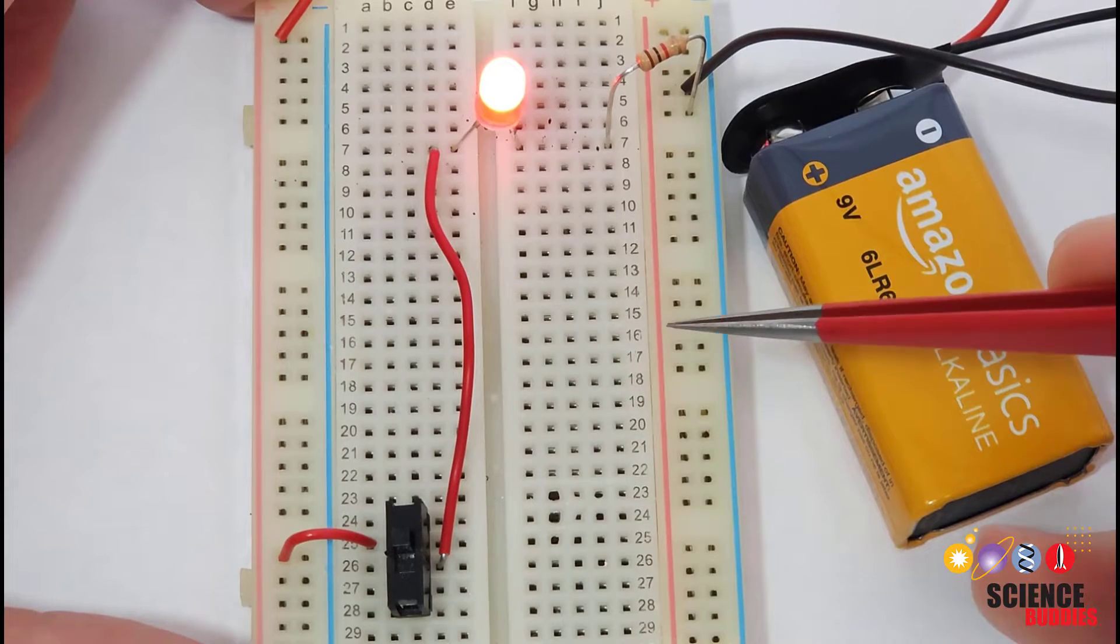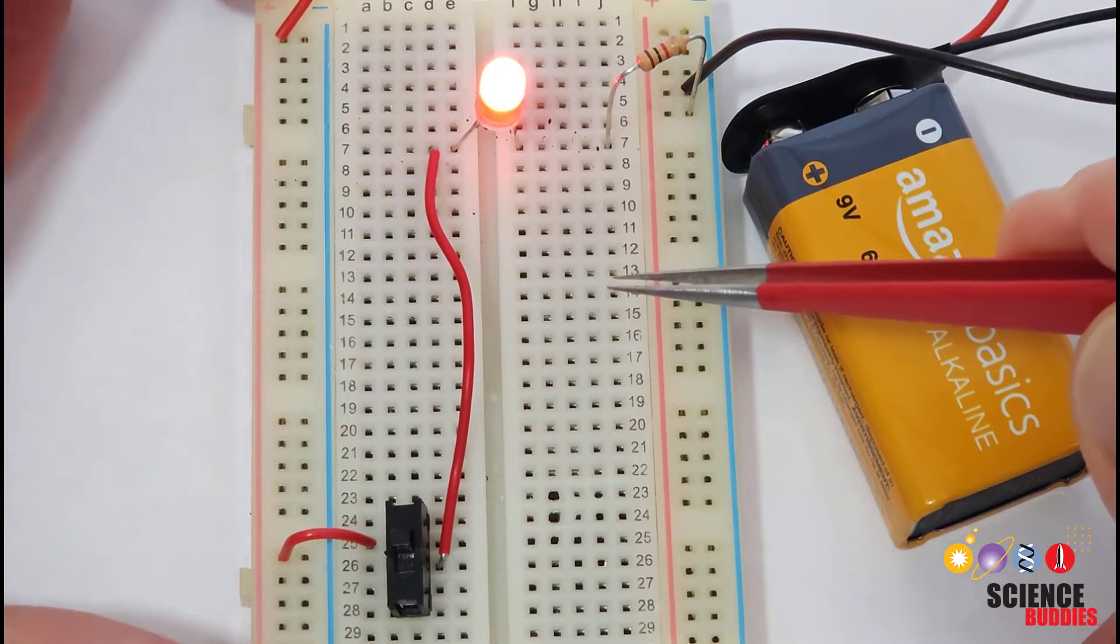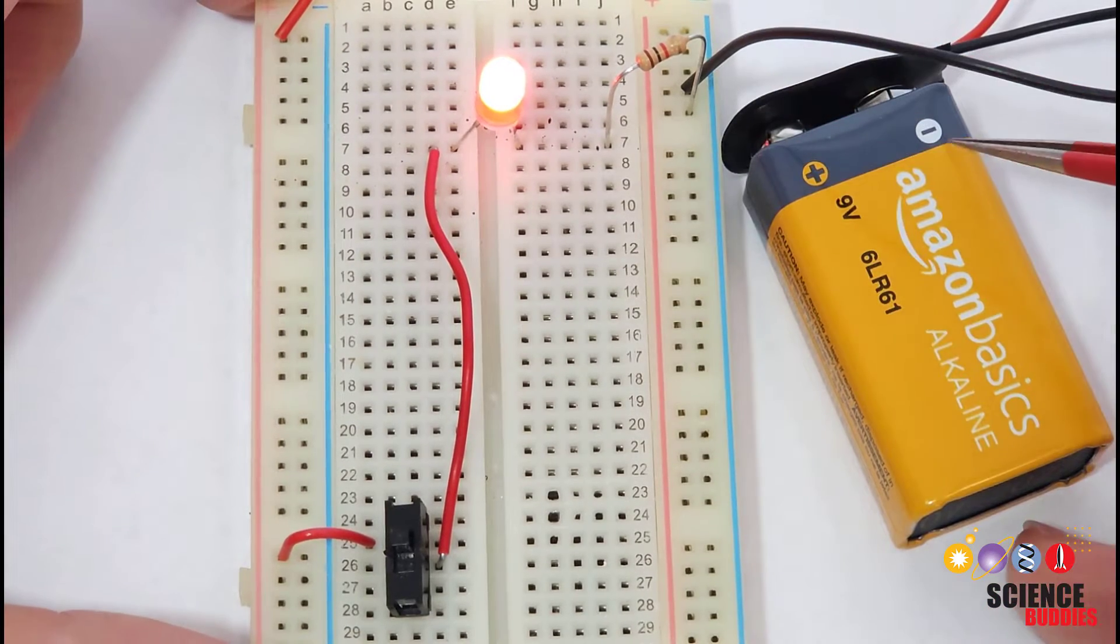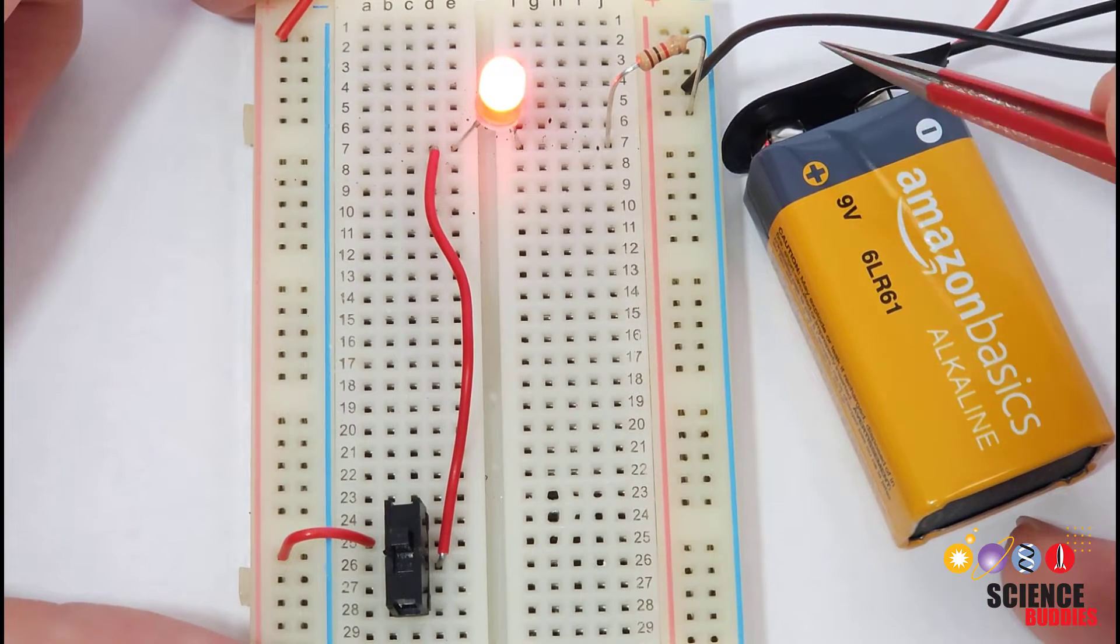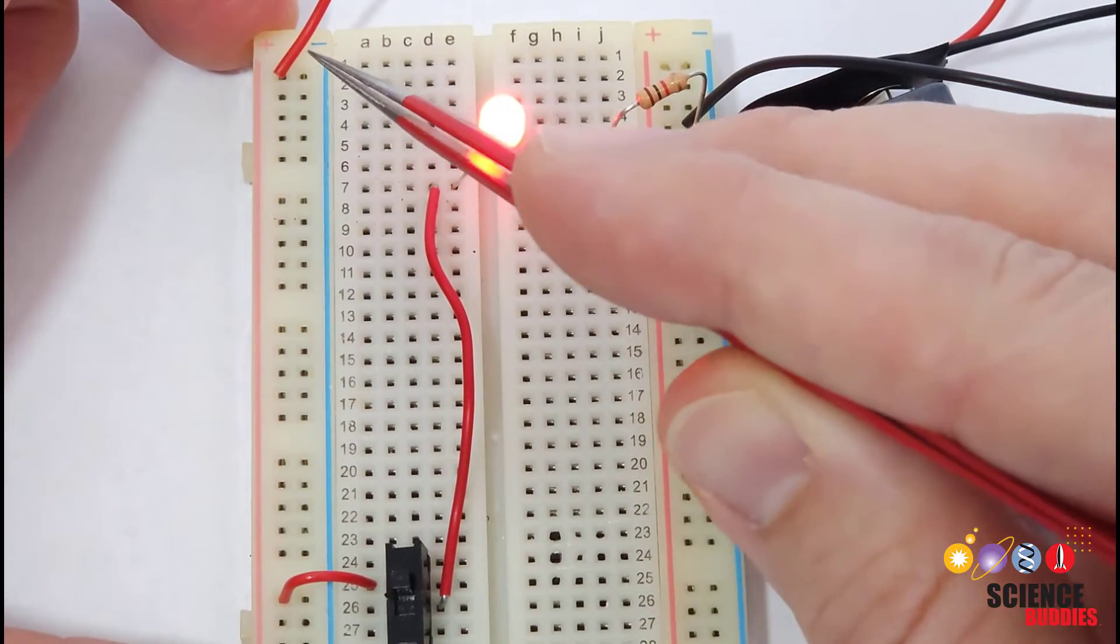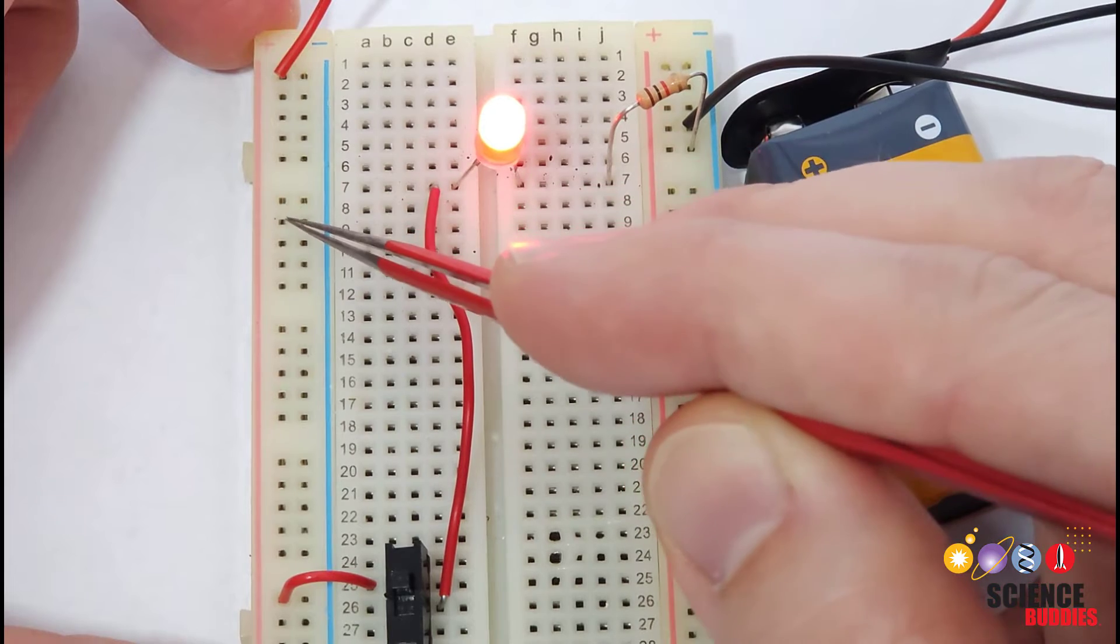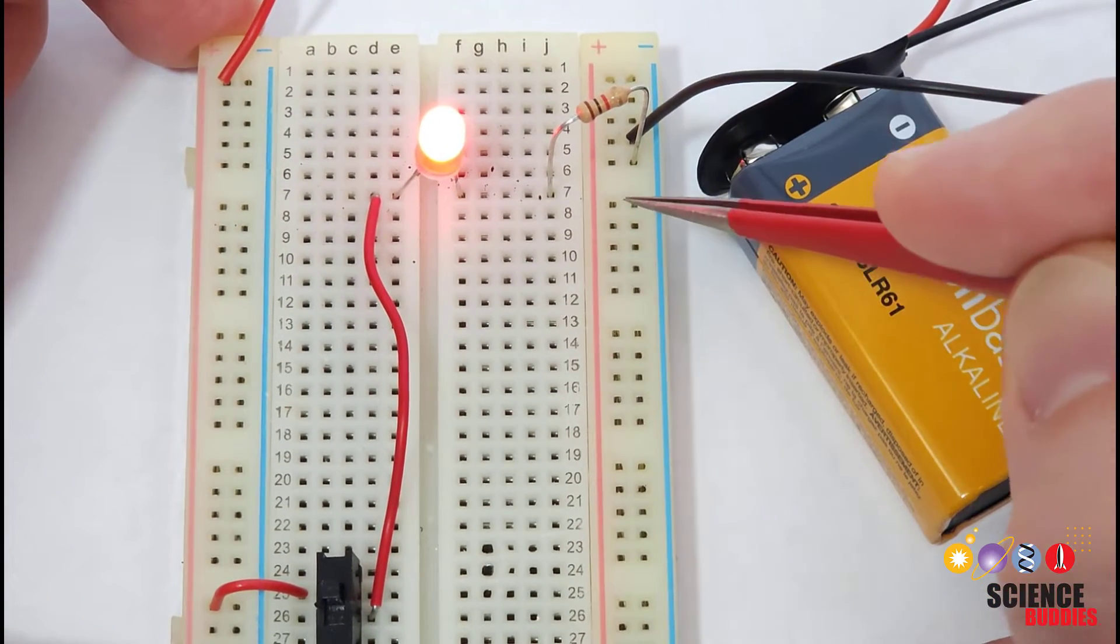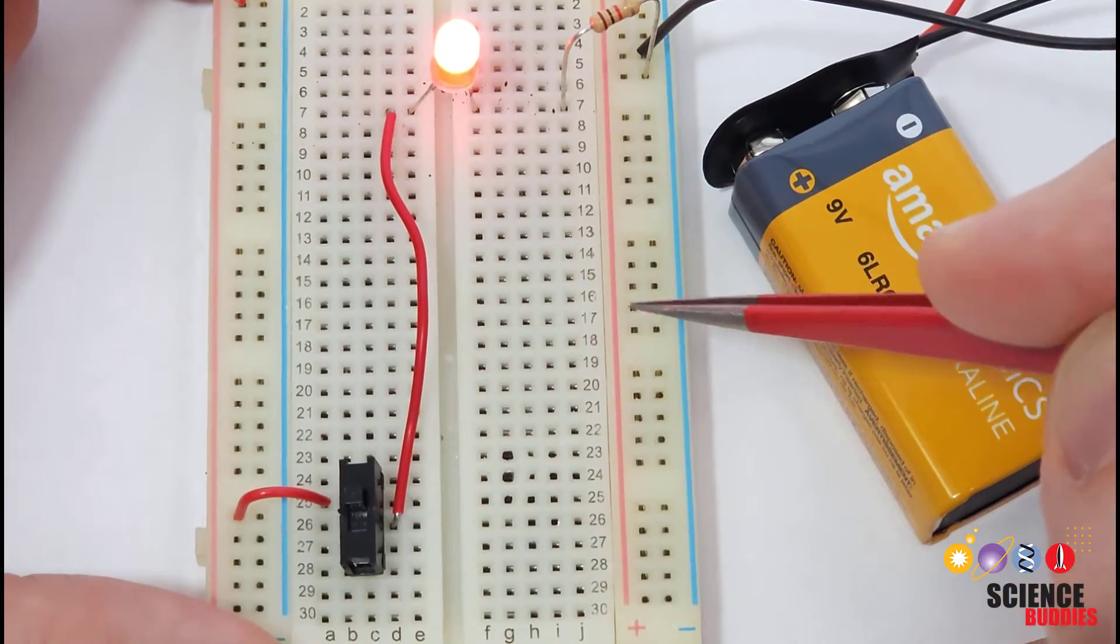Let's take a look at how to set this experiment up on a breadboard. If you don't know how to use a breadboard, we have instructions for that linked in the video description. The circuit is powered by a 9-volt battery with a snap connector that has positive and negative wires. The positive or red wire goes to one of the breadboard's power or positive buses, and the negative or black wire goes to one of the negative or ground buses.